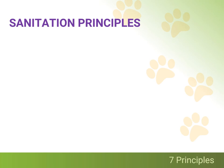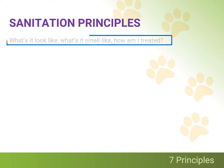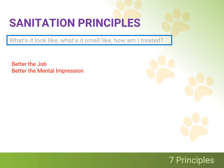Now on to part two. Let's discuss seven sanitation principles. What's it look like? What's it smell like? And how am I treated? First-time visitors quickly form a mental impression of facility quality and personnel by observing what a facility looks like, smells like, and how they are treated. The quality of one's facility sanitation program and the products used will determine what your facility looks like and smells like. The better the job done, the better the mental impression left with visitors and the quality of care you provide. I cannot stress enough the importance of this first sanitation principle.